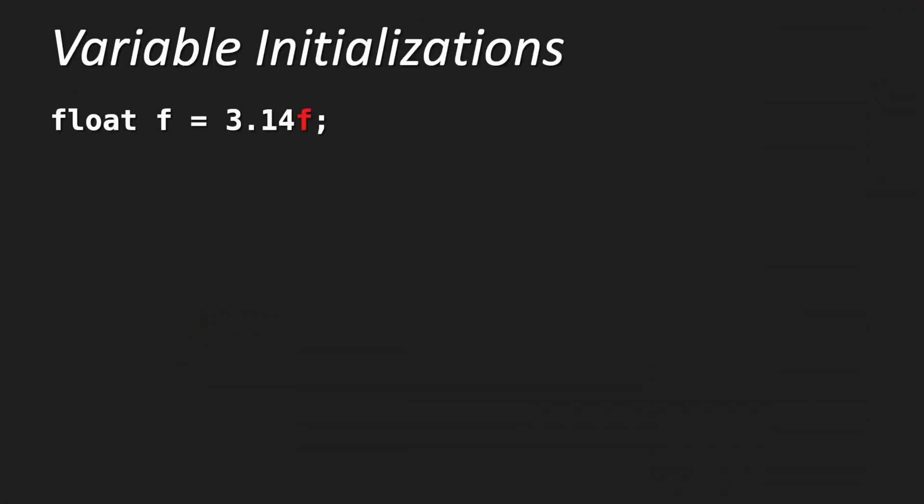Notice we have a float value, so we have a decimal value — in Java we use the point for a decimal comma. We indicate with an f that it is definitely a float value. This is important because float and double look pretty much the same on first impression, but internally they hold a different range of numbers. So when you write a float, write 3.14f. And if you have a double, for instance double d equals 3.0, you write a d behind it to indicate to Java whether it is a float or a double.